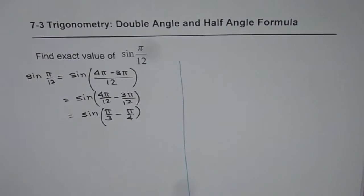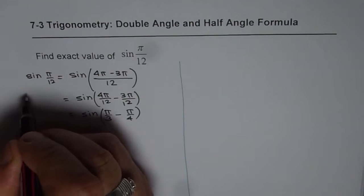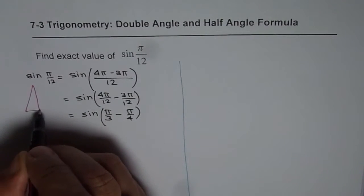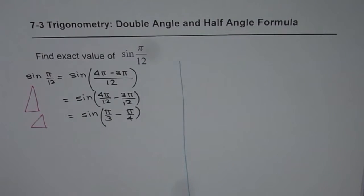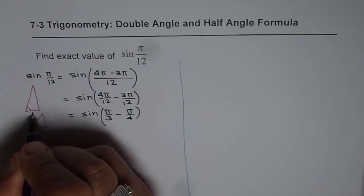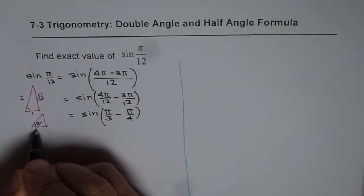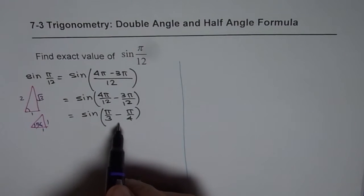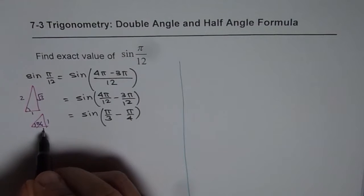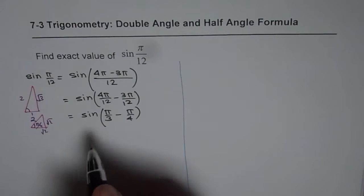Now you can use special triangles to find the values of sine(π/3) and sine(π/4). For π/3, the triangle has sides 1, 2, and √3. For π/4, the triangle has sides 1, 1, and √2. When doing this kind of work, it is better to use √2, √2, and 2 as the values.